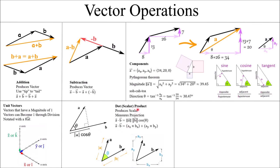A dot product, or scalar product, is another vector operation. When you have vectors A and B, the projection of A onto B is essentially A cosine theta. The formula is: A dot B equals the magnitude of A times the magnitude of B times cosine theta. Notice this produces a scalar — no direction. Alternatively, you can compute it as AX times BX plus AY times BY — two ways to get the same result.